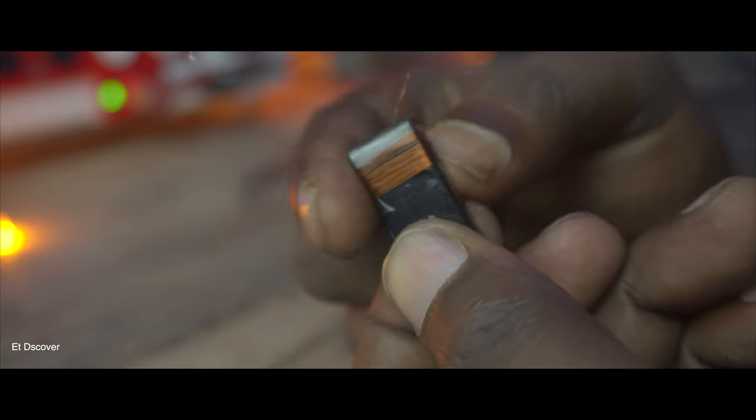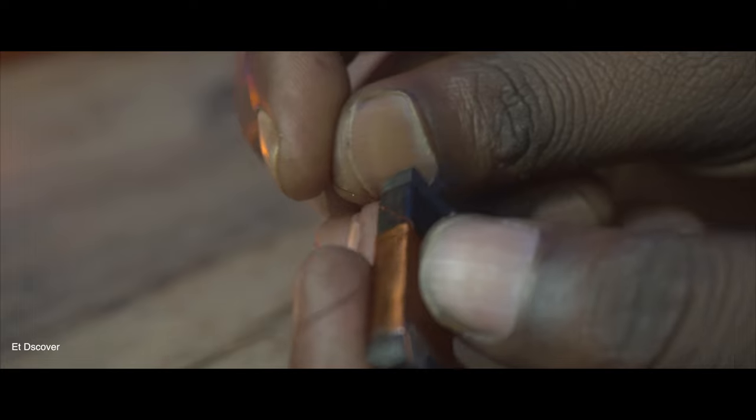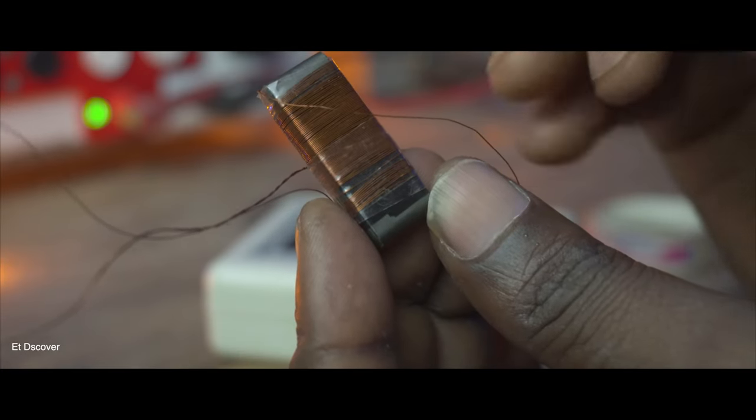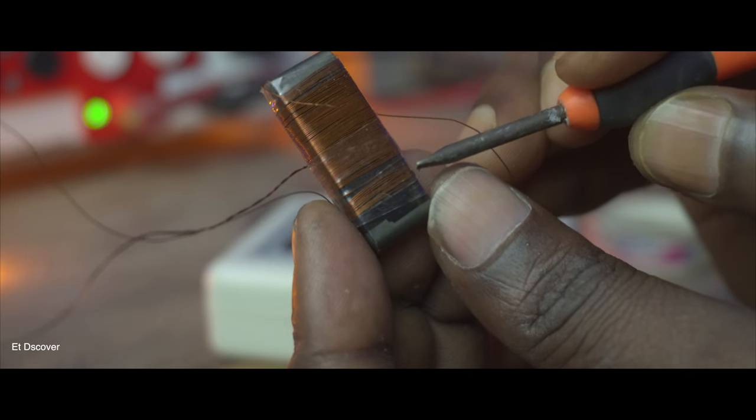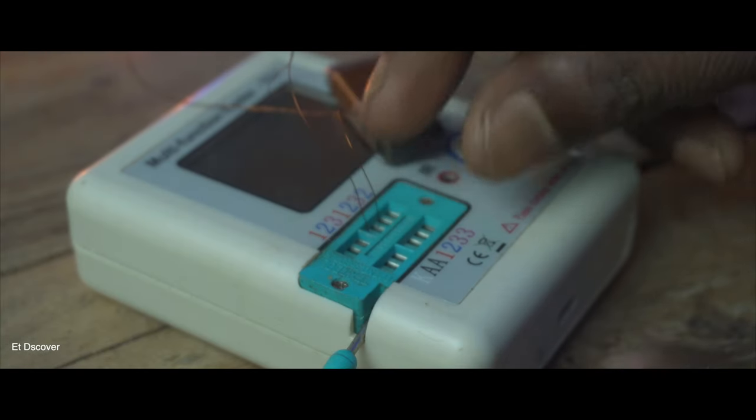For the shortwave radio you need to twist 9 times, and the entire coil will produce 0.30 millihenry, and these nine twists will produce 2 microhenry. If I measure it with my LC meter, you will see it shows exactly 0.30 millihenry.